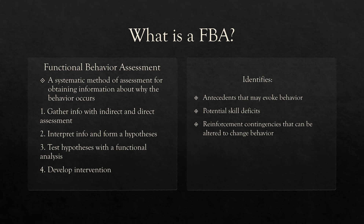Our four-step process: first, we gather information with indirect and direct assessments. We interpret that information and form a hypothesis of why the behavior is occurring — essentially, what's the function. We test that hypothesis with a functional analysis, and then we develop our interventions. The FBA identifies antecedents that may evoke behavior, potential skill deficits and behavior issues, and reinforcement and punishment contingencies that can be altered. Importantly, the FBA does not choose the intervention for you — it gives you the information to create the intervention. That's a very important distinction.